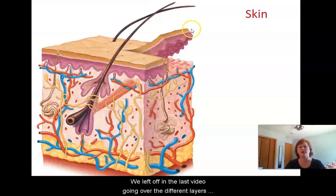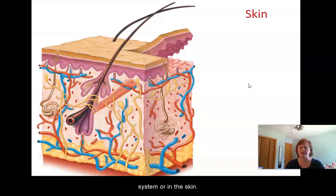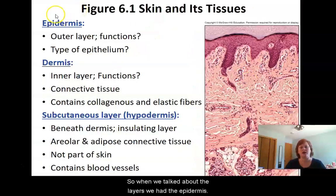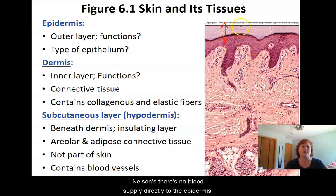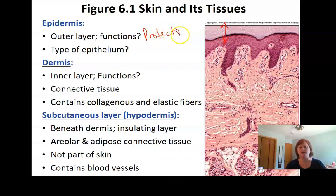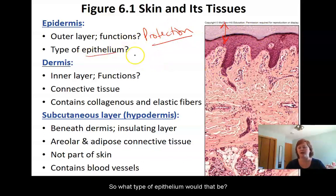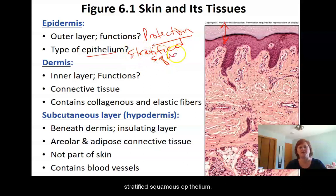We left off in the last video going over the different layers and accessory structures found in the integumentary system. When we talked about the layers, we had the epidermis, which is this outer layer here. Since there's no blood supply directly to the epidermis, the epidermis really has one primary function, which is protection. We have lots of layers of flat dead cells, so that would be stratified squamous epithelium.